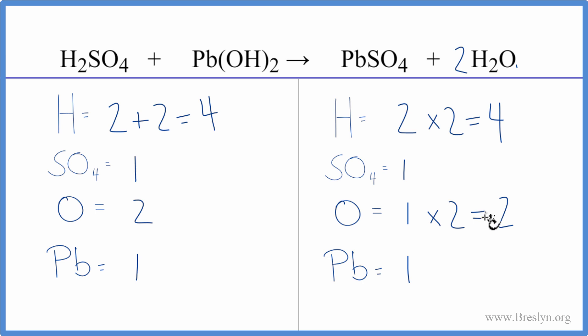This equation, it's actually balanced. So it didn't help us a whole lot to count the sulfate as just one item here, but that can be very useful as you balance these neutralization and double displacement reactions. This is Dr. B with the balanced equation for H2SO4 plus Pb(OH)2. Thanks for watching.